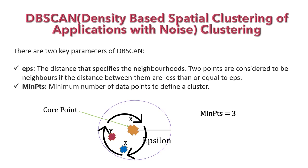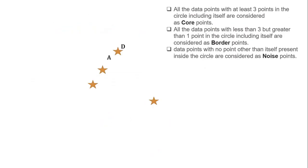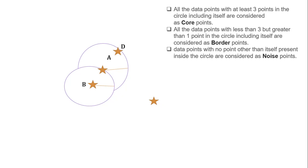Let's visualize this in a bigger frame. Point A is our core point. We create a distance epsilon and draw a circle with A as center. We can see there are minimum 3 points inside this circle, so point A satisfies the condition and is a core point. Now for point B, we draw a circle with epsilon as radius. Point B has only 2 data points inside its circle, so it does not satisfy the core point condition.